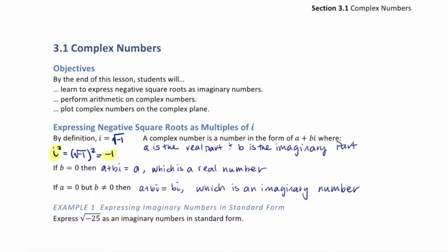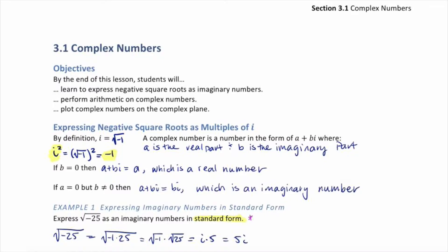Example 1: expressing imaginary numbers in standard form. Express the square root of negative 25 as an imaginary number in standard form. So we have the square root of negative 25 equals the square root of negative 1 times 25, which equals the square root of negative 1 times the square root of 25. So we have i times 5, which we write as 5i. Standard form means separating the real and imaginary parts — write your number as a plus bi.